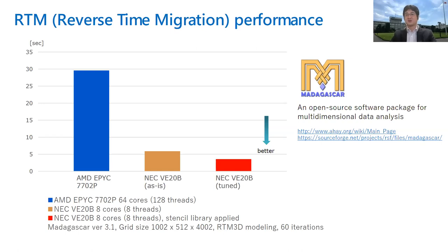Let's see how well vector processors perform. The first example is 3D RTM — reverse time migration — performance. Using Madagascar, an open source software package for multidimensional data analysis that includes modules related to oil and gas, we compared RTM 3D modeling performance with AMD EPYC processors. The NEC VE20B vector processor is five times faster than AMD, and with minor tunings you gain another 40% performance increase.